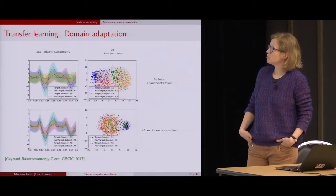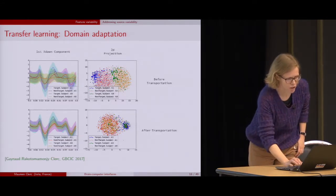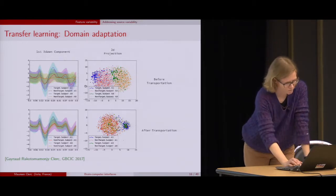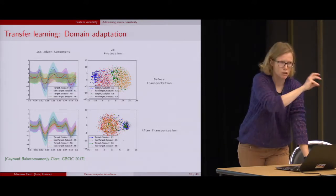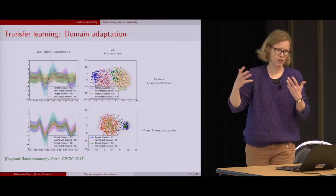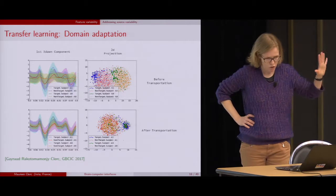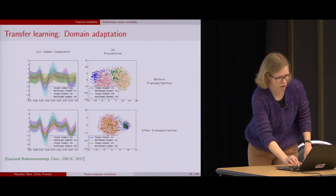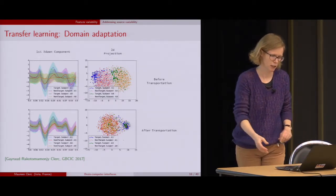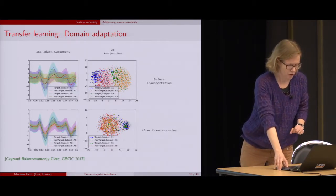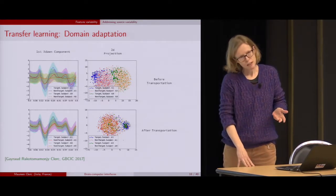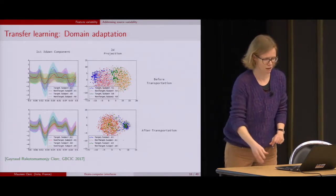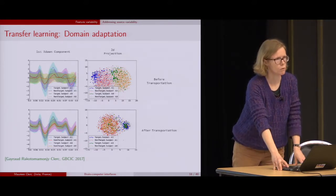Here I show an example where the P300 wave for two different subjects looks very different. By applying this transportation principle — where blue and red are target and non-target for one subject, green and orange for another — after transportation, the two datasets converge to very similar regions, and we can use the same classifier for a new subject. It's still a bit hard to apply in real time because when we start with a new subject we don't have much data yet to learn the transportation plan, but we're working on solutions.